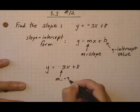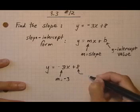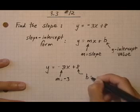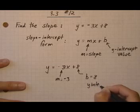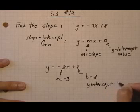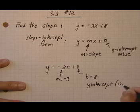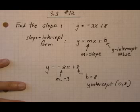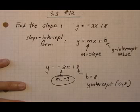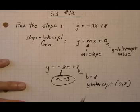The y-intercept: b is 8, but that's the y value of the y-intercept. So to show the y-intercept, x is zero at the place where y equals the b value of 8. The question was just asking for slope, so our slope is minus 3. The slope is the coefficient of x when you have it in this format.